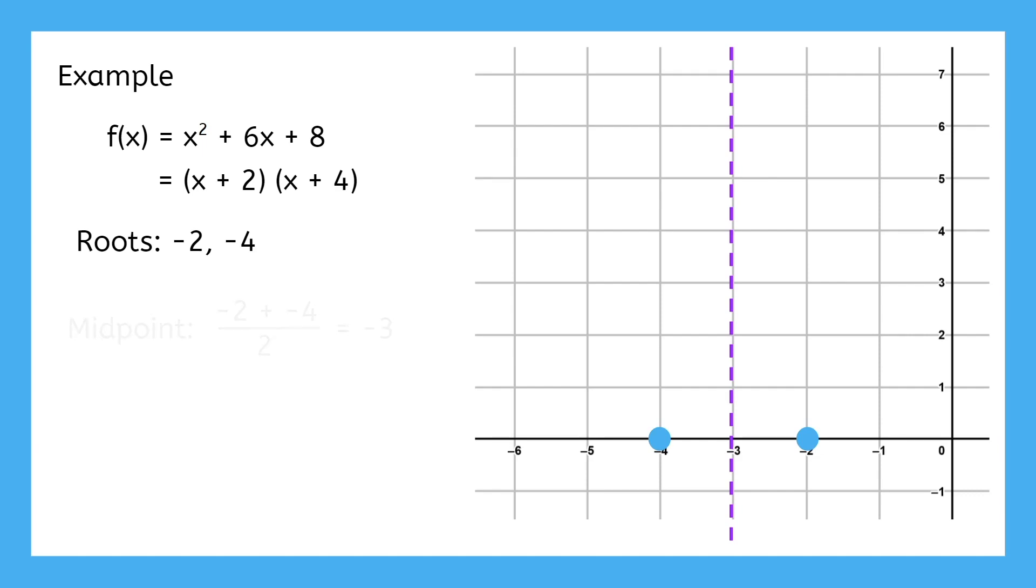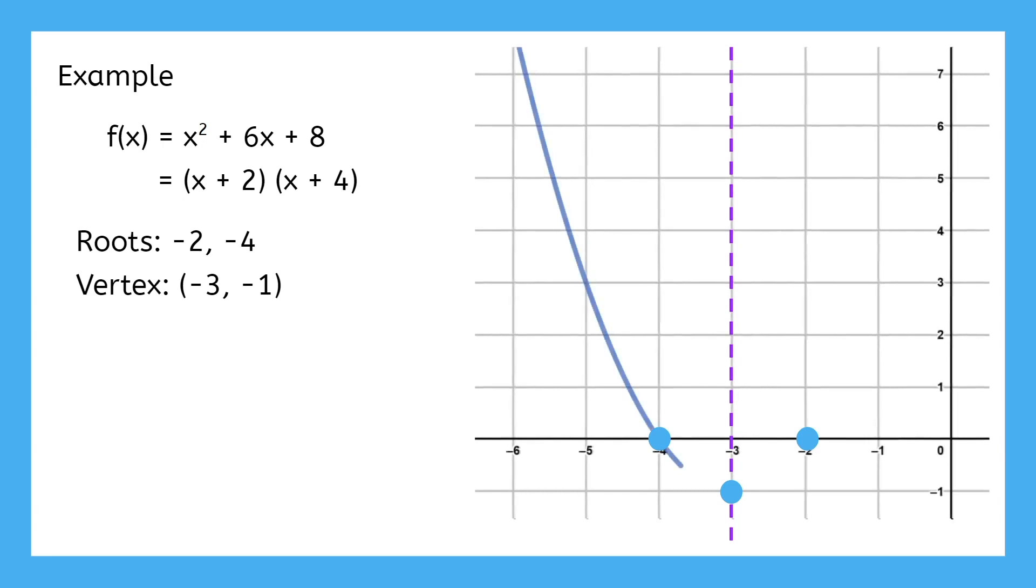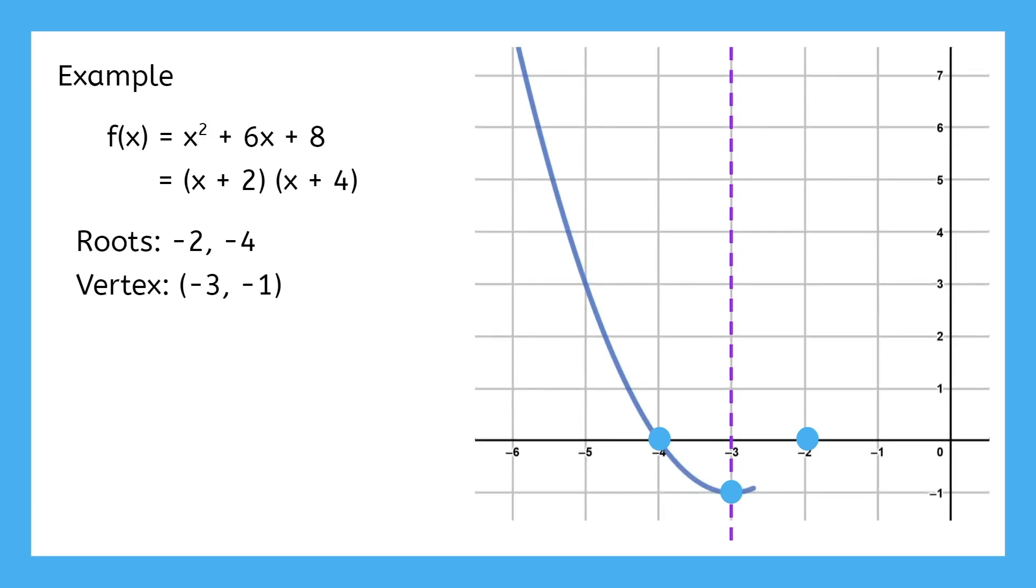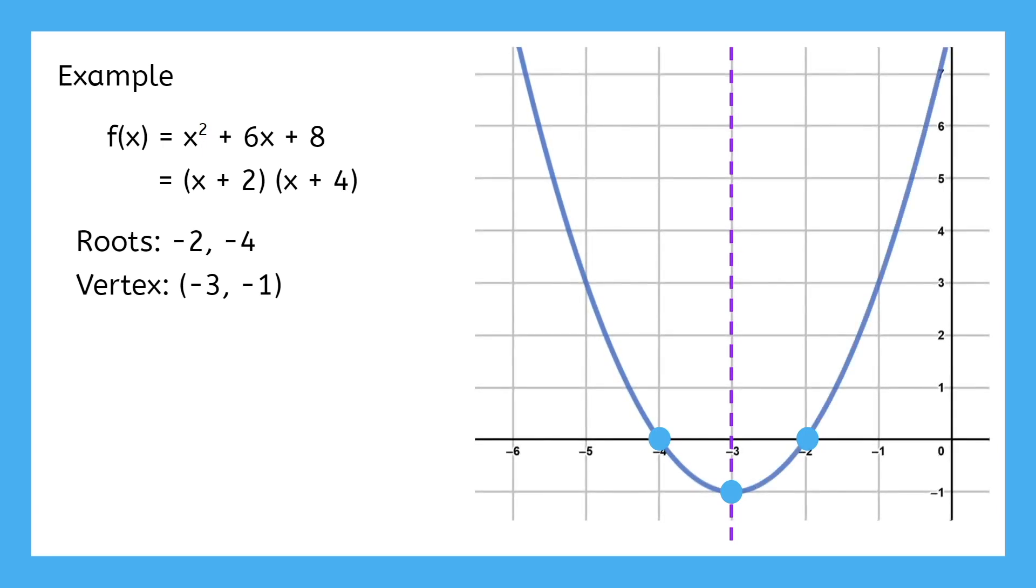Finally, the vertex has to be somewhere on this line of symmetry. So input that x value and see what you get. We end up with -1 here. So the vertex is at (-3, -1). If you want to make sure your parabola is super accurate, you can evaluate more inputs and plot their points, but three is the absolute minimum amount. Now we're ready to draw a curve, going through one root, down to the vertex, and then back up through the other root.